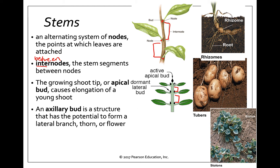Plants grow from the very tip — the roots grow lower and the shoot grows taller. At the very tip is an apical bud, which allows the plant to continue growing tall. Next to the apical buds are lateral buds, which allow formation of branches, thorns, or flowers. If a plant has an active apical bud, the lateral buds near it will be dormant. To grow a short, bushy tree, you would cut off the apical bud so the lateral buds become active.